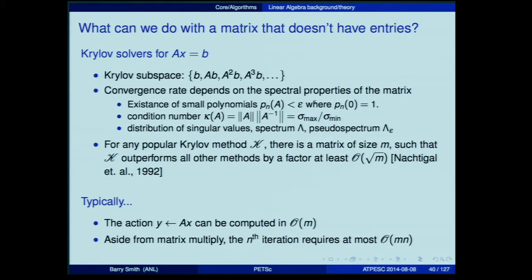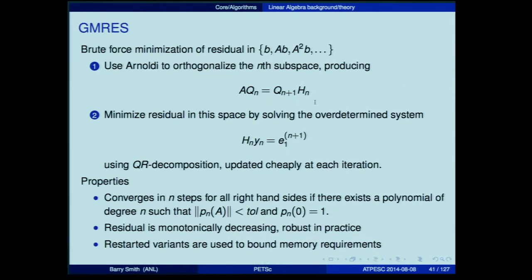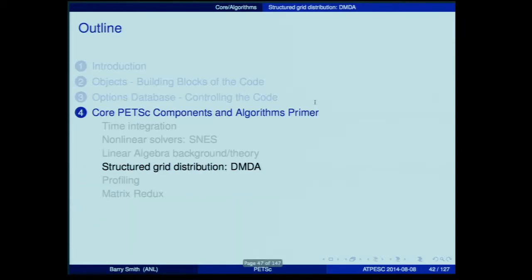When you have a matrix where you don't have the entries, the Krylov methods are fantastic for them because they're structured around finding a solution using only matrix-vector products. Our Krylov solvers are all based on this principle of calculating the action of the operator as inexpensively as possible. GMRES is a particular case.